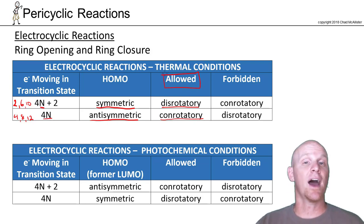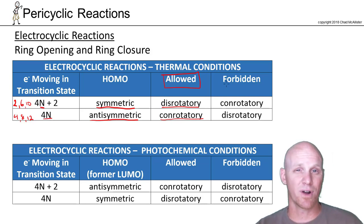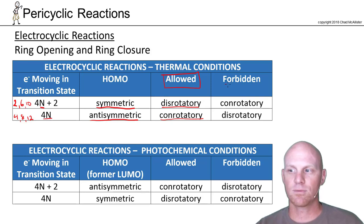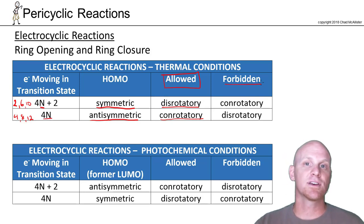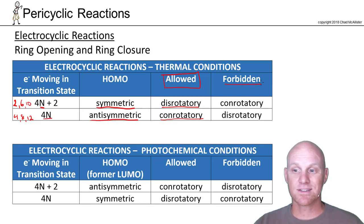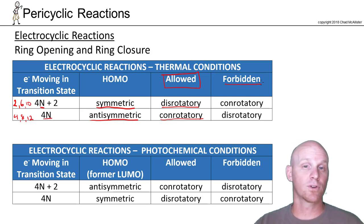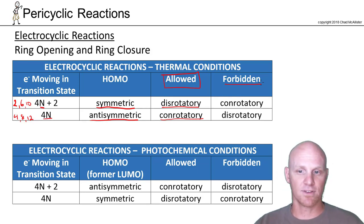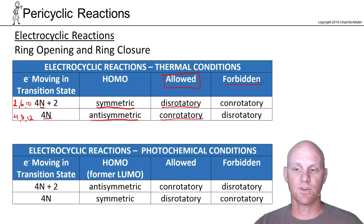If you're asked to predict products, you're being asked to predict the allowed products. But sometimes they give you products and ask whether it was allowed or forbidden. Forbidden doesn't mean a reaction doesn't happen — it just means it's symmetry forbidden and would happen on a minor pathway, not a major one. So if you have a symmetric HOMO, disrotatory is the allowed reaction; conrotatory would be the forbidden route. And exactly the opposite for a 4n — a multiple of four — electrons moving in the transition state.